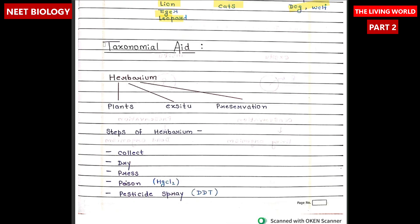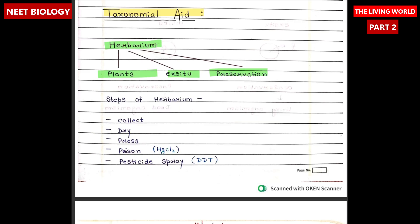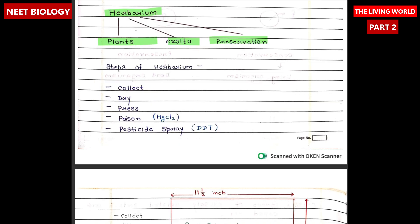Taxonomical aids are the tools and techniques used to identify, classify, and study the diversity of living organisms. These aids help to understand the relationship between species and their characteristics. First is herbarium. Herbarium is a collection of preserved plant specimens, typically stored and maintained for scientific studies, research, and education. The steps of herbarium preparation are: collect, dry, press, poison, then pesticide spray.